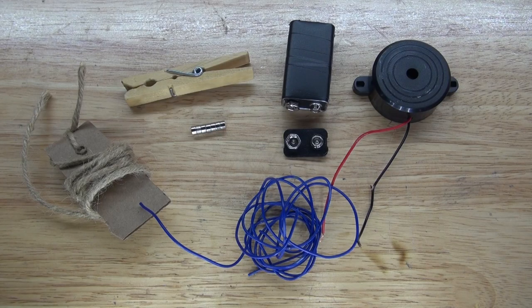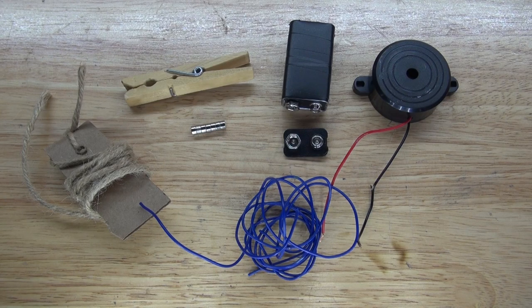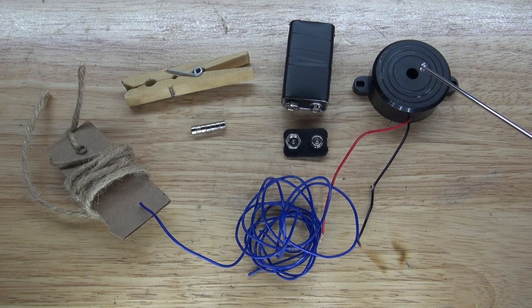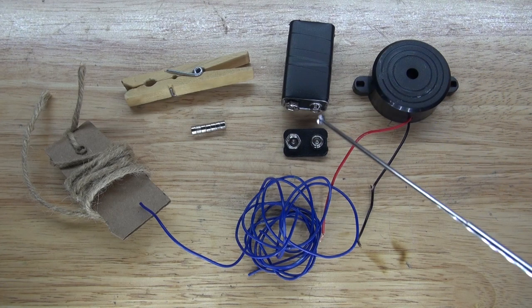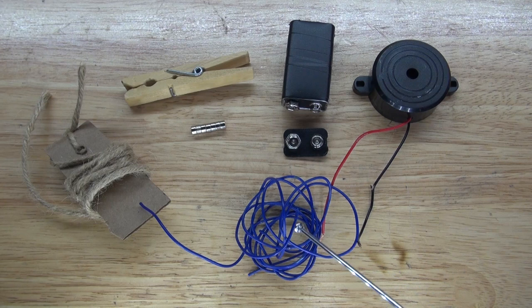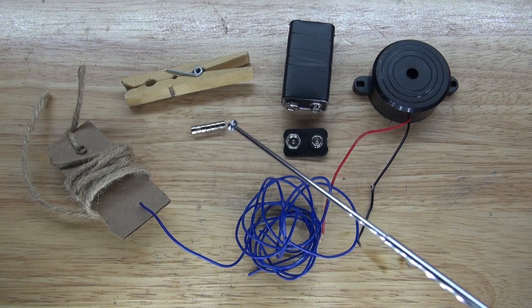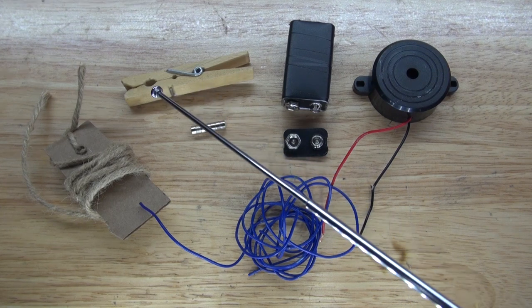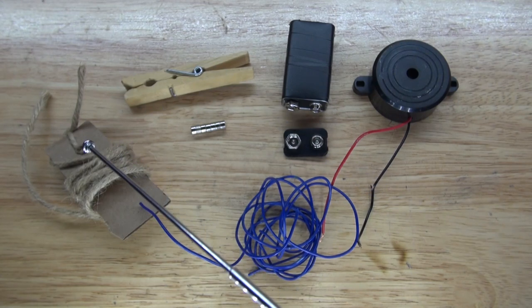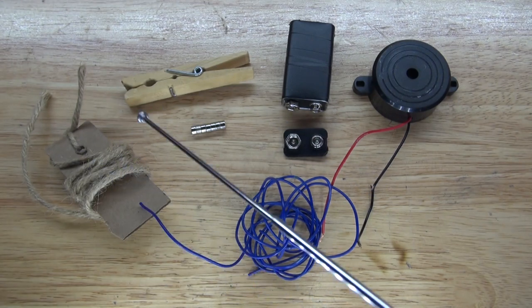And these are the items that you're going to need to make for this project. The items you're going to need are this passive buzzer, a 9-volt battery, 9-volt battery connector, some wire, neodymium magnets, clothespin, and this trigger tag, which is a piece of cardboard that has string attached to it.